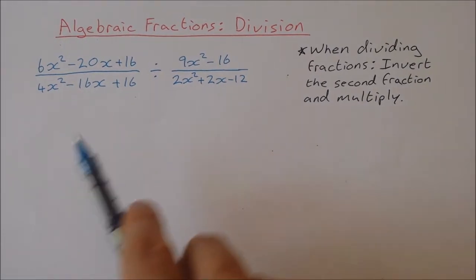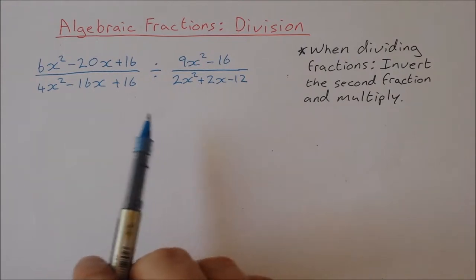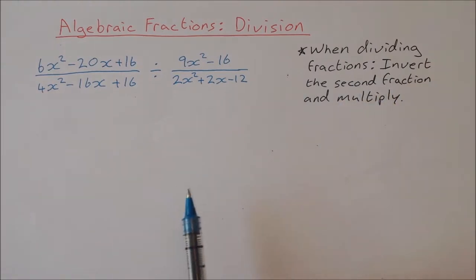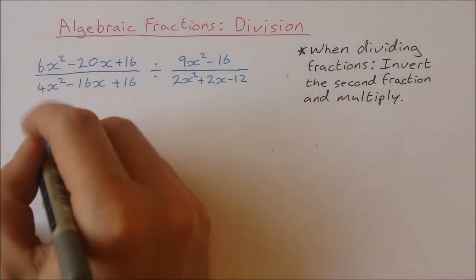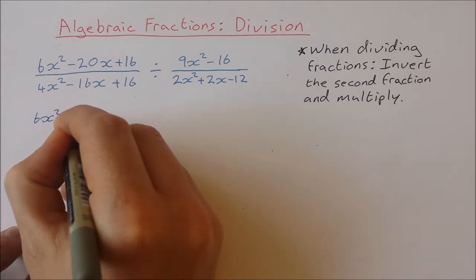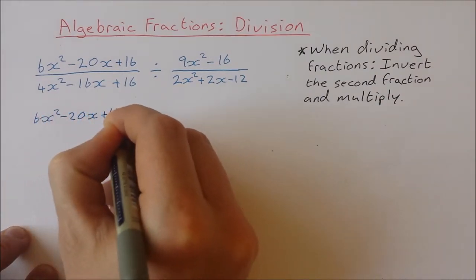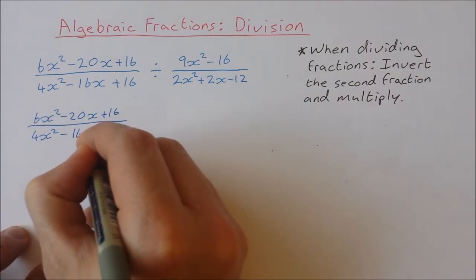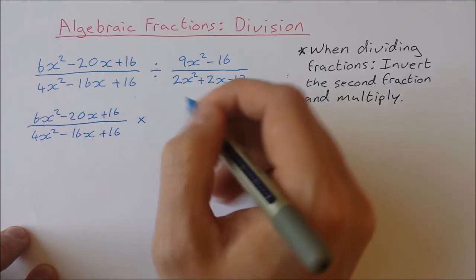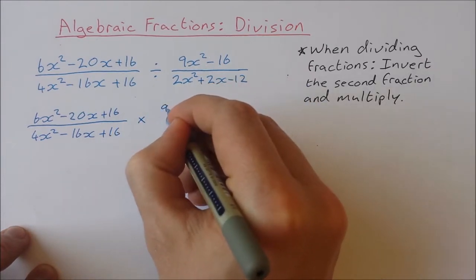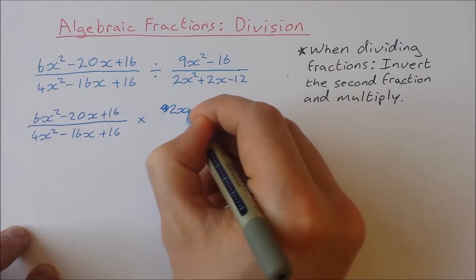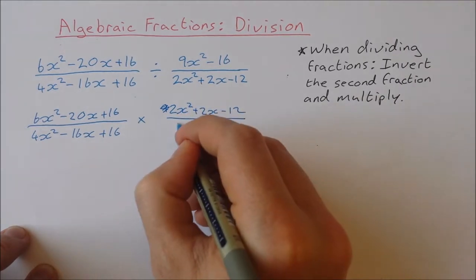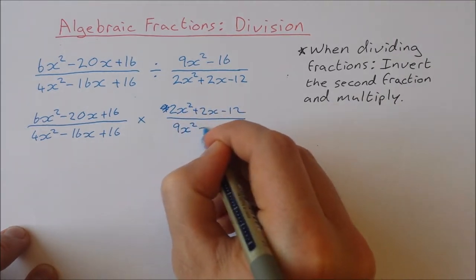Dividing algebraic fractions is just like dividing regular fractions. When you divide fractions you invert the second fraction and you multiply. So I'm going to do 6x squared minus 20x plus 16 over 4x squared minus 16x plus 16, multiplied by 2x squared plus 2x minus 12 over 9x squared minus 16.